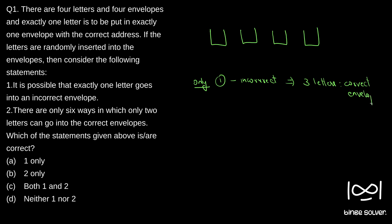So is that possible? If we randomly pick three envelopes and insert the correct letters into them, the only possibility left is for the fourth letter to also go into the correct envelope. We cannot have any other choice. So three letters going into the correct envelope and one letter going into the incorrect envelope is not possible. Statement one is false.